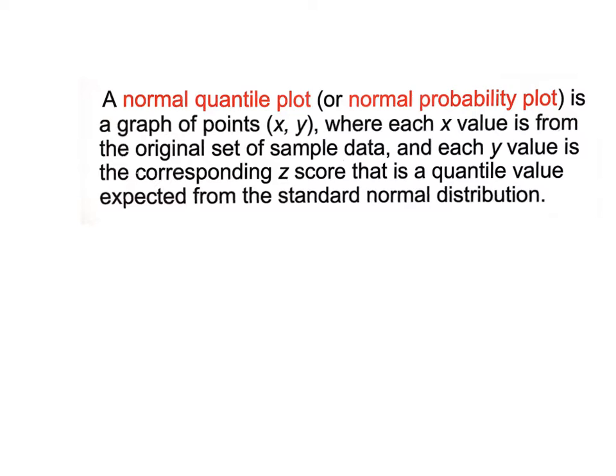A normal quantile plot, which is a QQ plot, is a graph of points XY where each X value is from the original set of sample data and each Y value is the corresponding z-score. That's a mouthful and we're gonna count on our technology to get the normal quantile or QQ plot for us, so we're not gonna worry. But I did want you to know the real definition behind it, where the points come from. That's where the points are coming from, even though we're just gonna graph it on our technology.